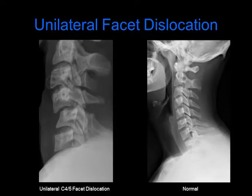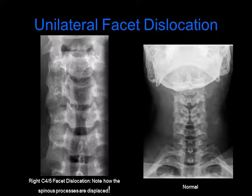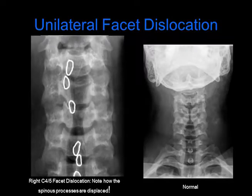Here is an example of unilateral C4-5 facet dislocation on the left. We can see that the C4 vertebral body is anteriorly subluxed in relation to C5, and there is an abnormality pertaining to the facets. However, we do not see the bowtie sign as we saw on the previous example of bilateral facet dislocation. On the AP view, note that there is right C4-5 facet dislocation because the spinous processes are displaced. On the right, we have a normal cervical spine.